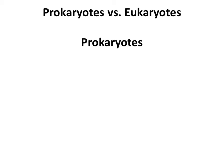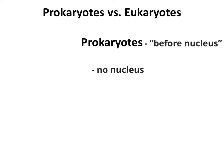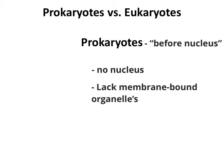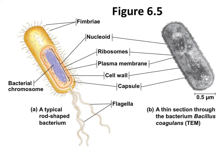The term eukaryotic means true nucleus, while prokaryotic means before the nucleus. Prokaryotic cells, therefore, have no nucleus. Their DNA is in an unbound region called the nucleoid. They lack membrane-bound organelles. Their cytoplasm is bound by the plasma membrane. Organisms of the domains bacteria and archaea consist of prokaryotic cells. In figure 6.5, you can see a prokaryotic cell — notice how the DNA is not bound by a nucleus, but is all in one compacted area referred to as the nucleoid. Prokaryotic cells also have a much simpler internal structure.